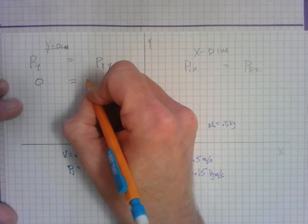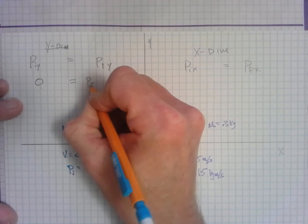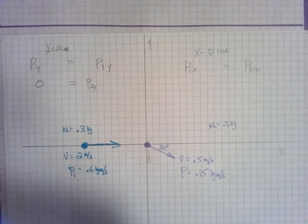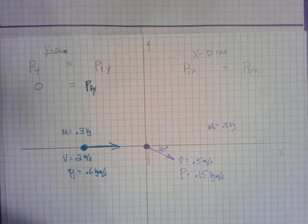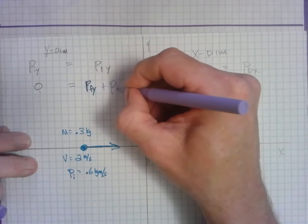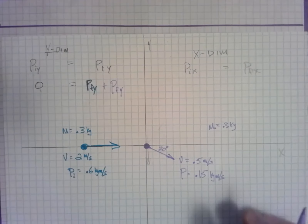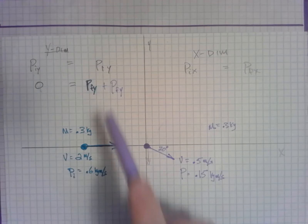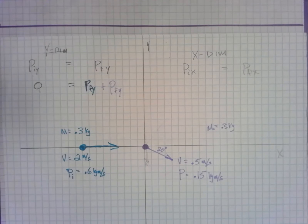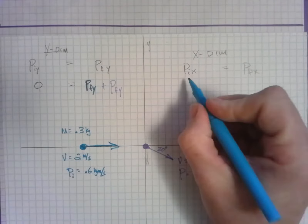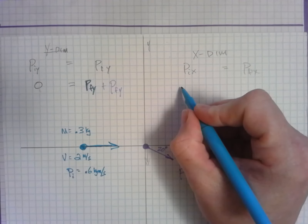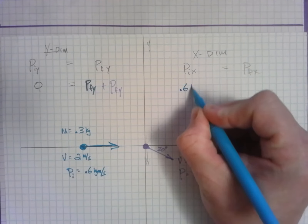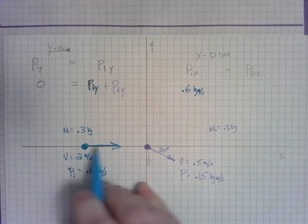When the blue ball rebounds, its y-component is going to have to be the same magnitude as the purple one's but opposite in direction, because they need to add up to zero. So the final y-momentum of the blue one plus the final y-momentum of the purple one equals zero. In the x-dimension, all the initial momentum — 0.6 kilogram meters per second — belongs to the blue ball at the start.